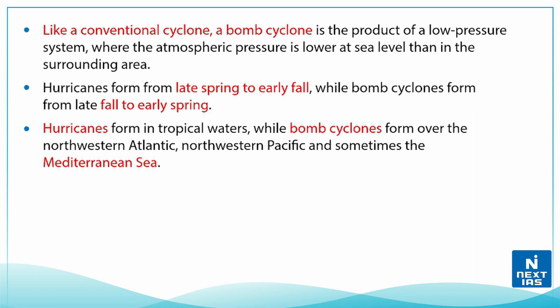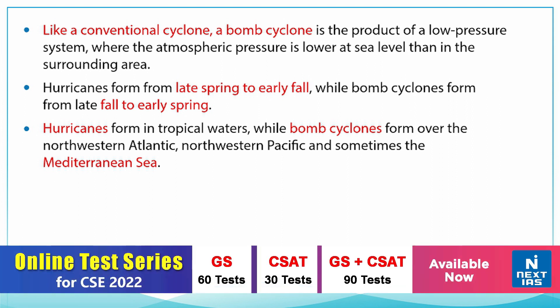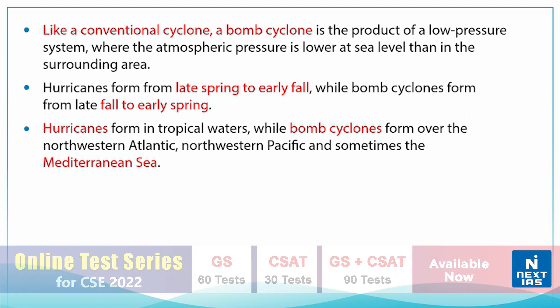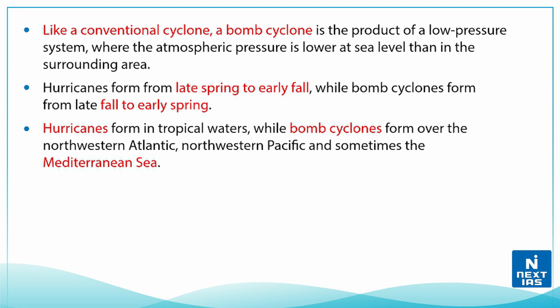Hurricanes form from late spring to early fall, while bomb cyclones form from late fall to early spring. Hurricanes form in tropical waters, while bomb cyclones form over the northwestern Atlantic, northwestern Pacific, and sometimes even the Mediterranean Sea.